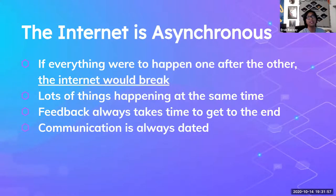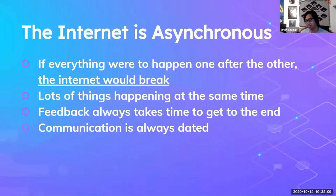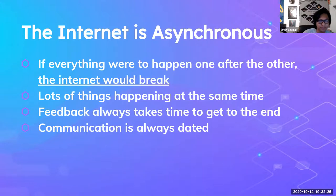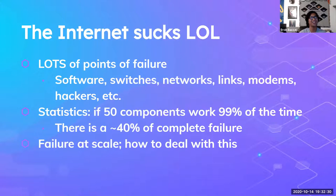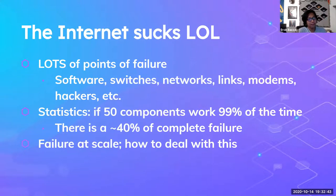Communication is always dated — you need to add a timestamp to your communications so a server understands when the request happened. Going back to Alice spamming Bob: Bob received all those requests but also needs to know when they were sent, since one request could be from a year ago and another from 20 seconds ago. Bob needs to understand which request to respond to because some are too old. Additionally, the internet has lots of points of failure — software, switches, networks, links, modems, hackers. If 50 components each work 99% of the time, there's roughly a 40% chance of complete failure.